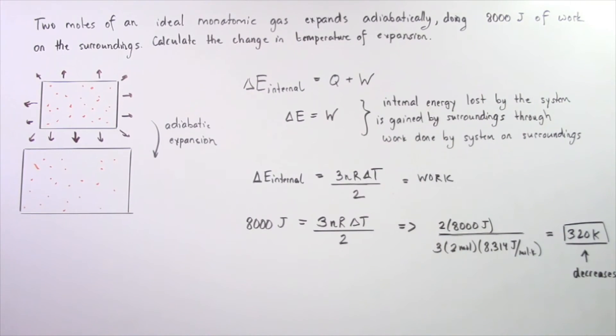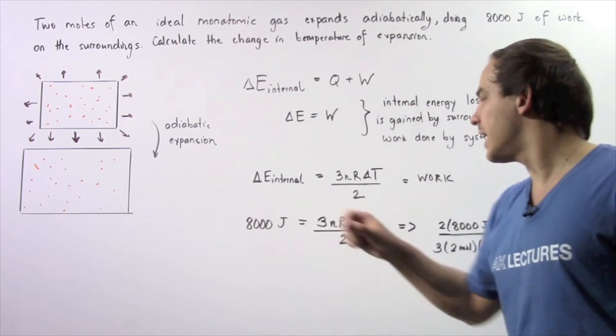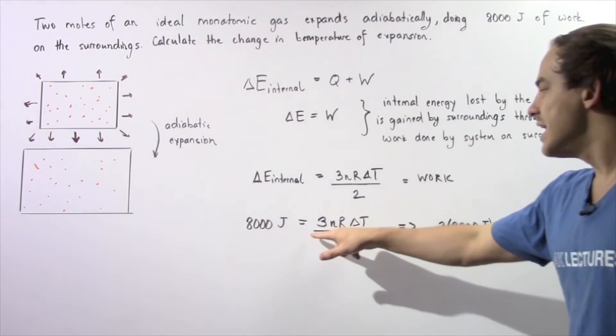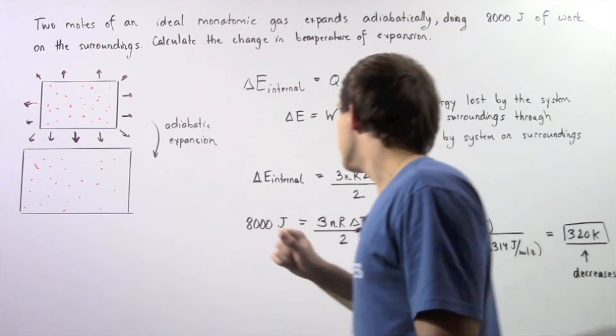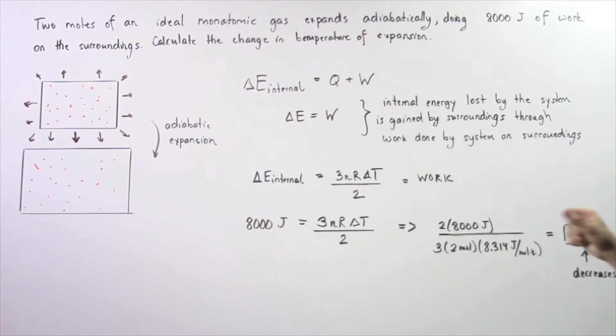The change in T equals 2 multiplied by 8,000 joules divided by the number of moles multiplied by 3. Number of moles is 2 multiplied by 3 multiplied by the gas constant 8.314 joules per mole times Kelvin. The joules cancel, the moles cancel, and we're left with approximately 320 Kelvins.